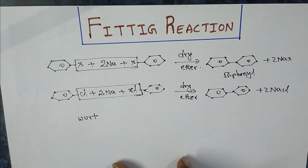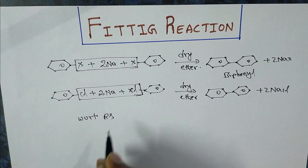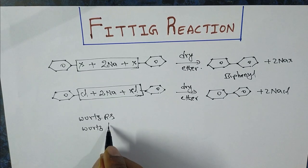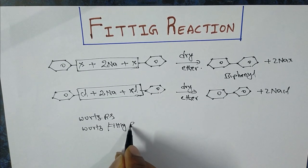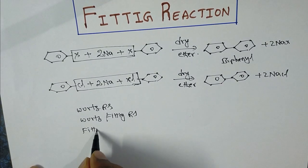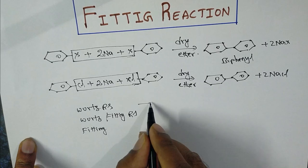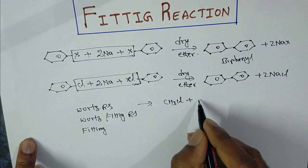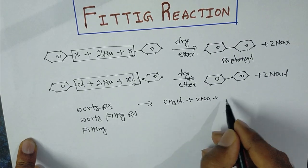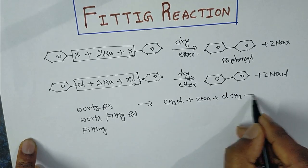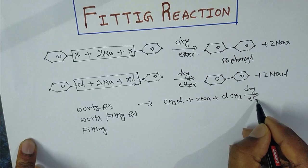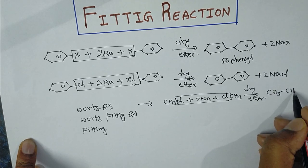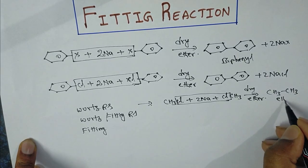Okay students, let us compare the three reactions: Wurtz reaction, Wurtz-Fittig reaction, and Fittig reaction. In the Wurtz reaction, we take alkyl halides — both are alkyl halides. For example, CH₃Cl plus 2 moles of sodium plus ClCH₃, in the presence of dry ether. So 2NaCl is removed and we get ethane.